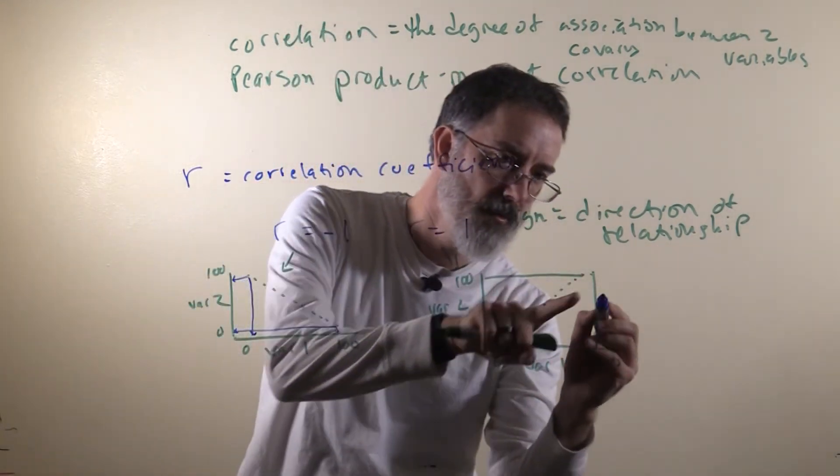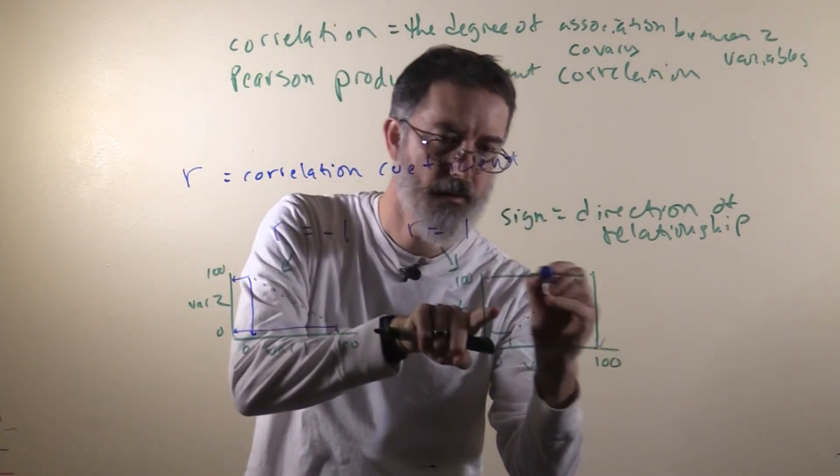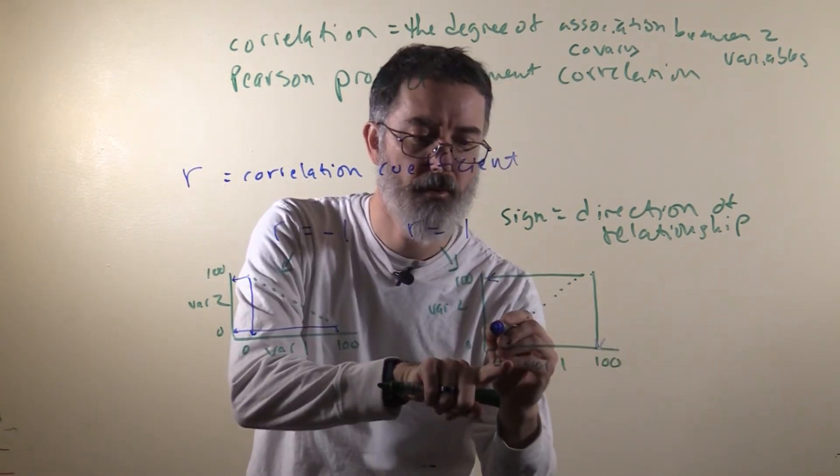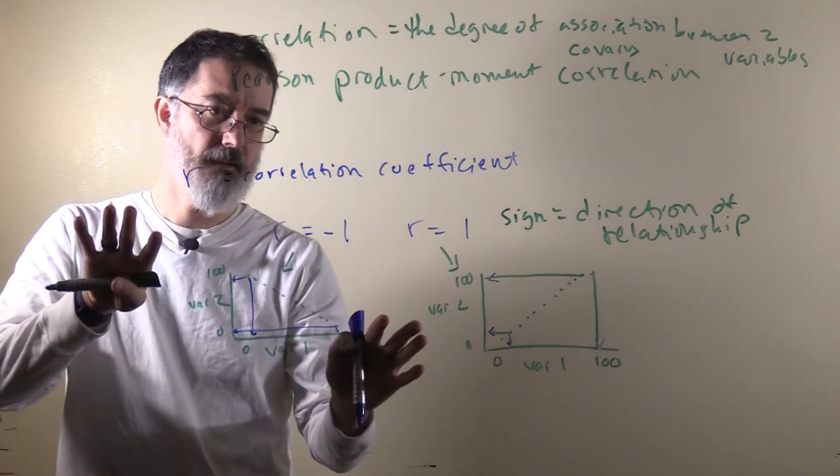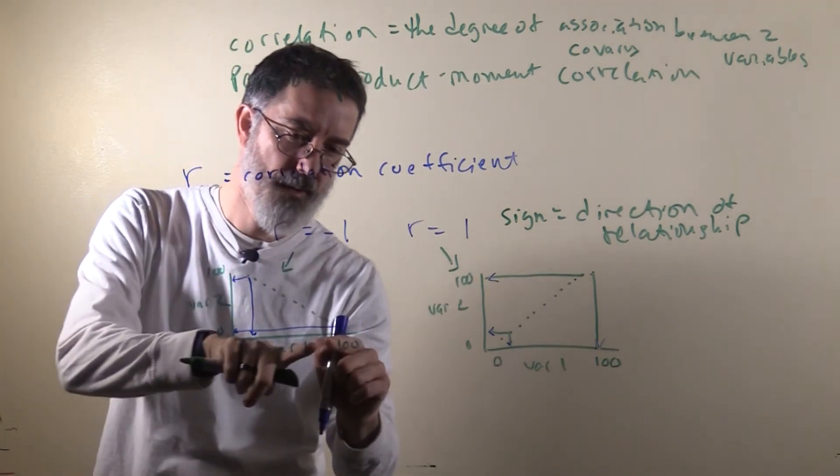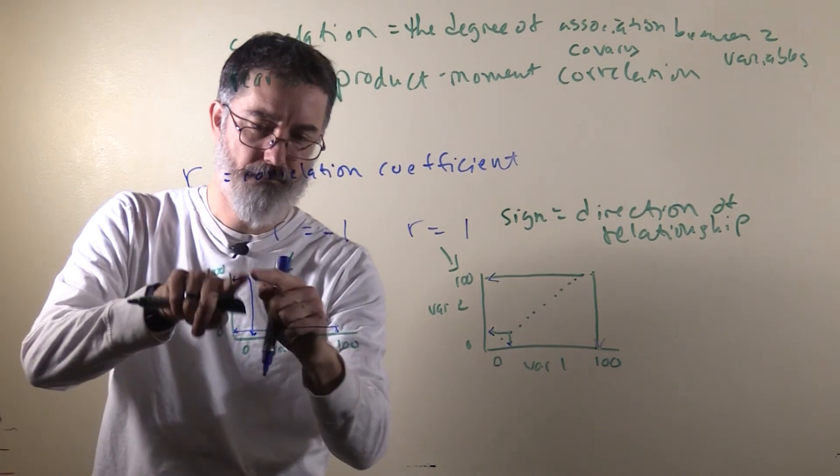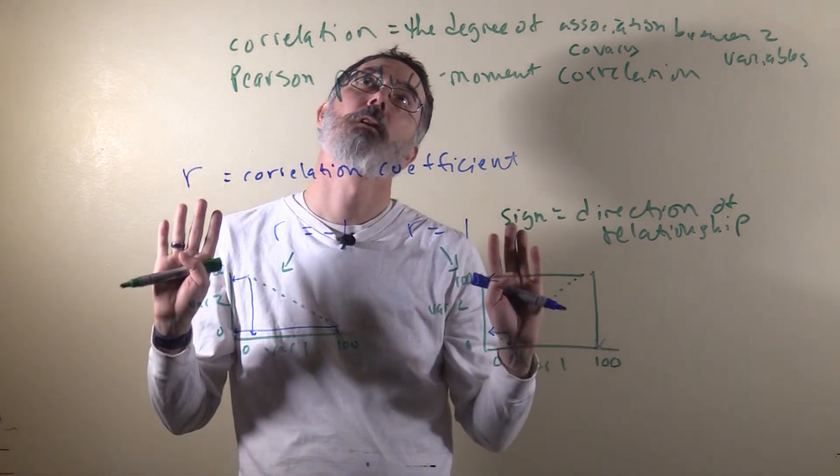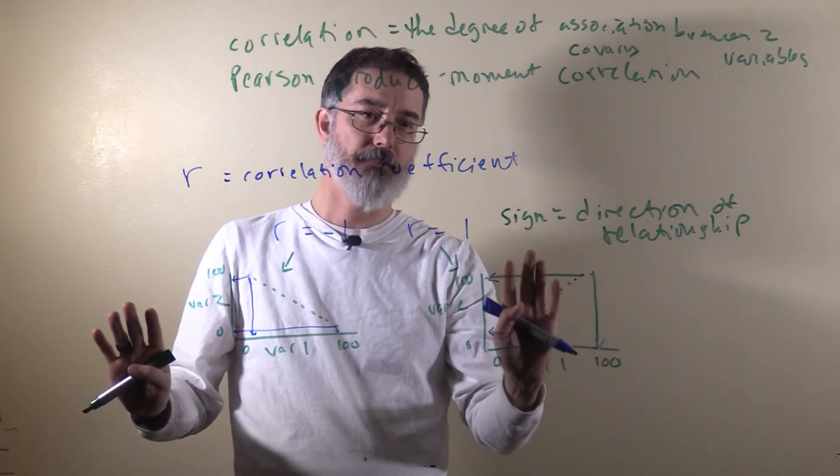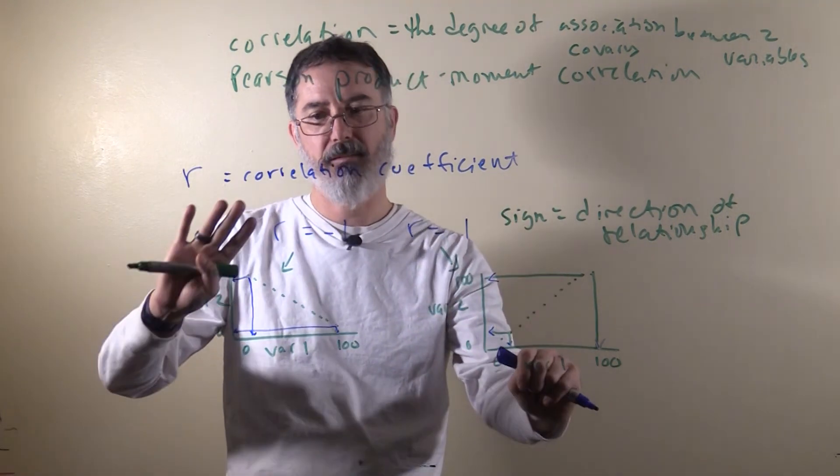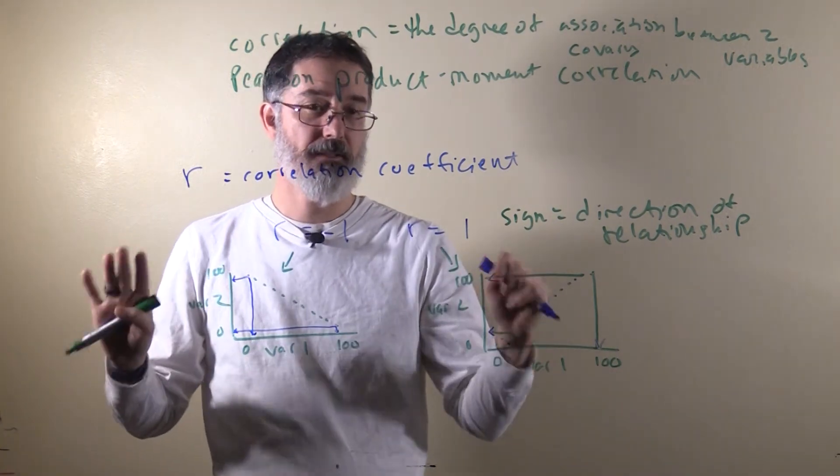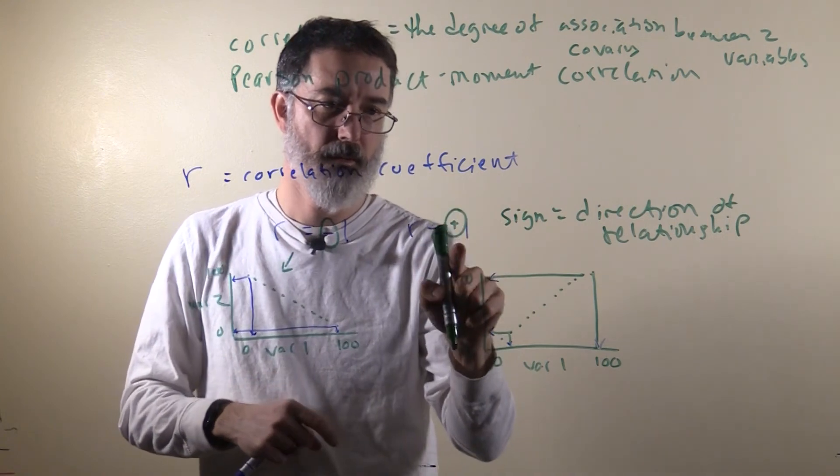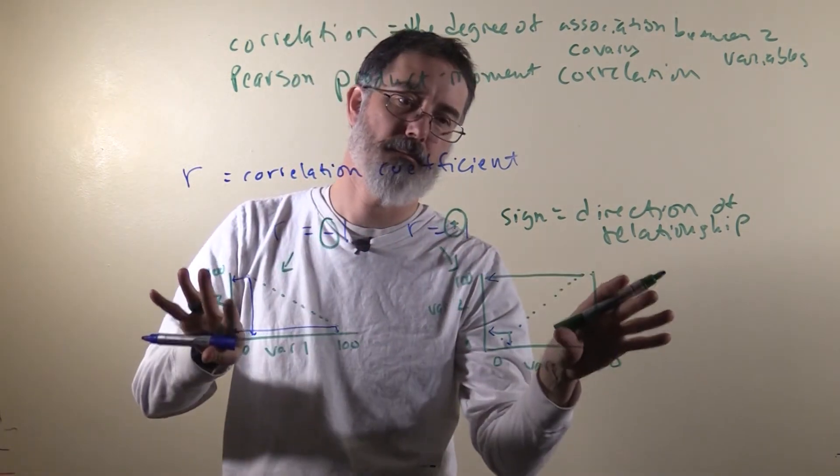For a positive correlation, people who are high on one variable are high on the other. Or equivalently, people who are low on one variable are low on the other. Negative and positive here are not good or bad. A negative correlation is not a bad one. A positive correlation is not a good one. Positive and negative just refers to the type of relationship between the two.